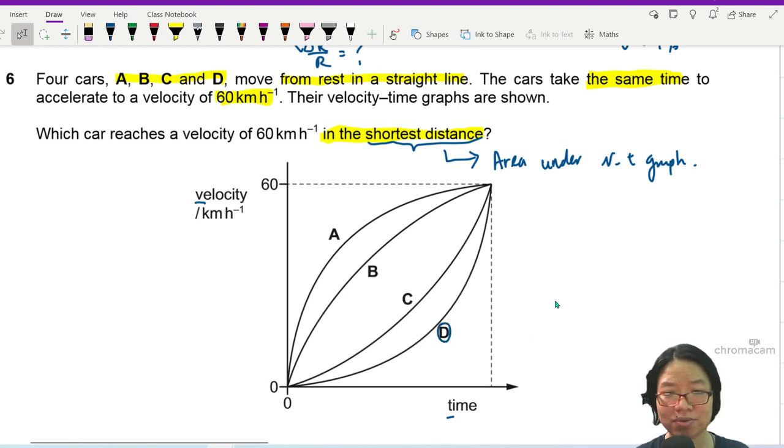So the answer is D. Because if you need a visual, then this is the area under this curve. It's the smallest area already.